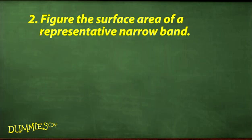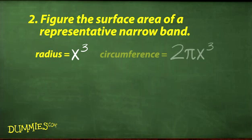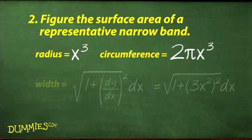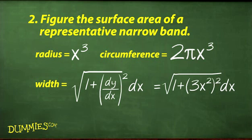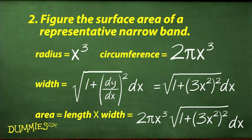Next, figure the surface area of a representative narrow band. The radius of the band is x³, so its circumference is 2πx³. That's the band's length. Its width, a tiny hypotenuse, is the square root of 1 plus (dy/dx)² times dx, which equals the square root of 1 plus (3x²)² times dx.